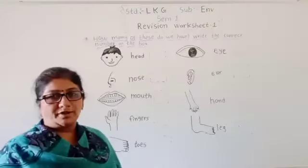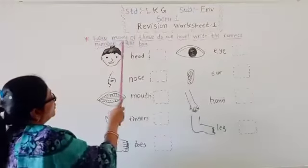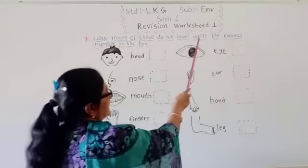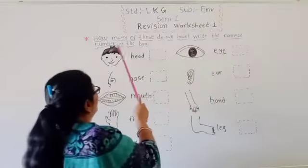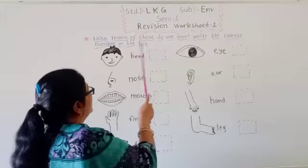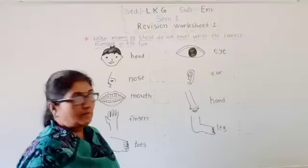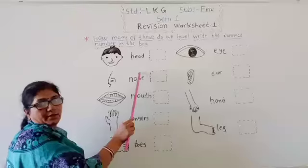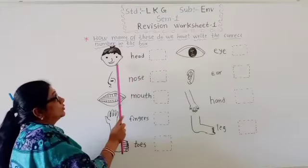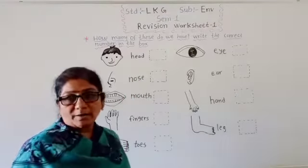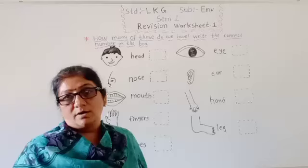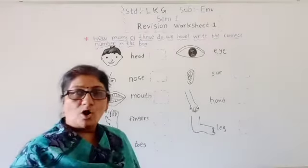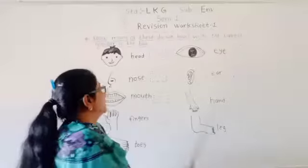Today's topic is: How many of these groups do we have? Write the correct number in the box. Here is the picture. How many parts are shown here? Write the correct number.